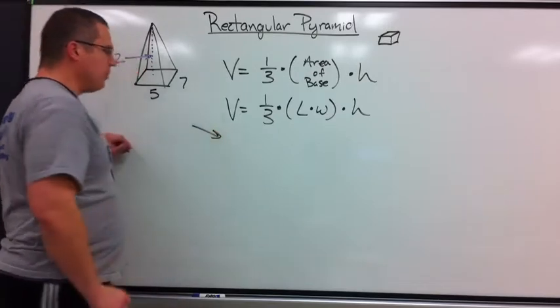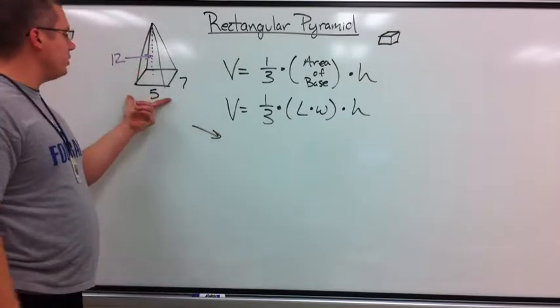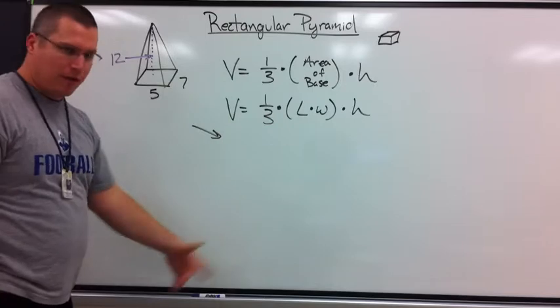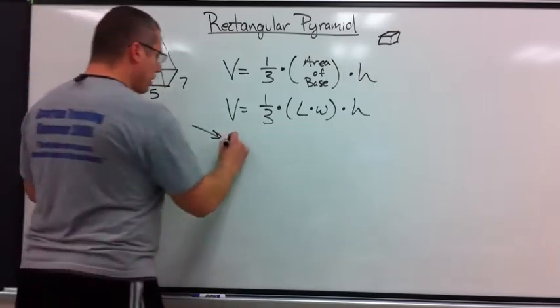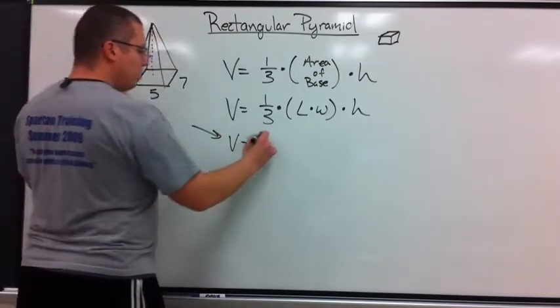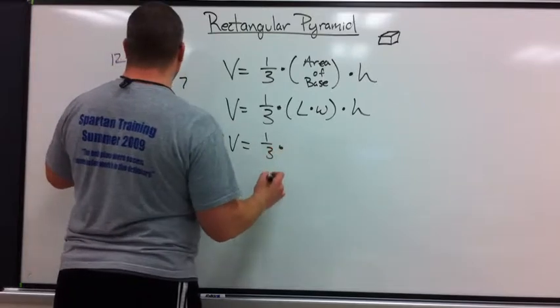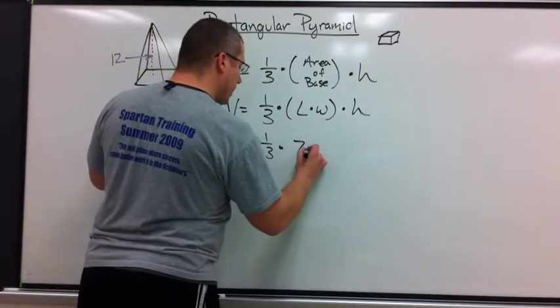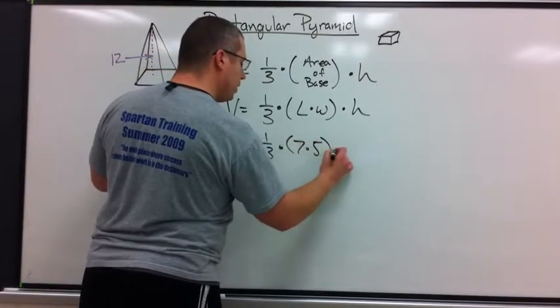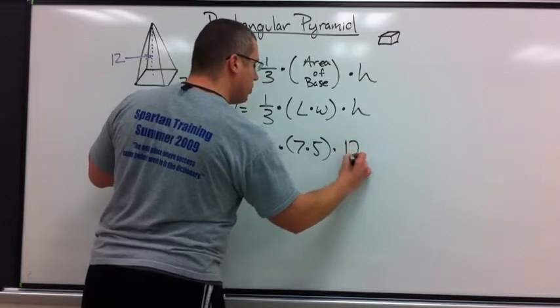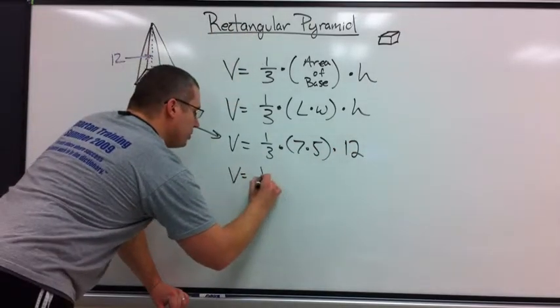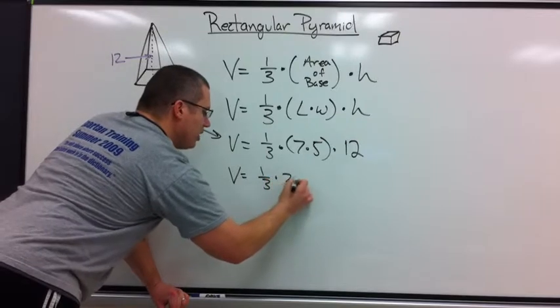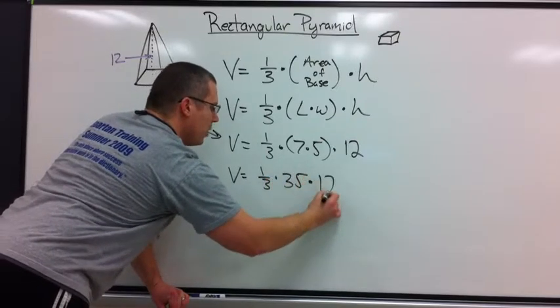Drop in here on our homework paper. What do we do? We take the formula, substitute in variables, use order of operations, and we're done. V equals 1/3 times length times width is 7 times 5 times height in this case is 12. Parentheses first, 1/3 times 35 times 12.